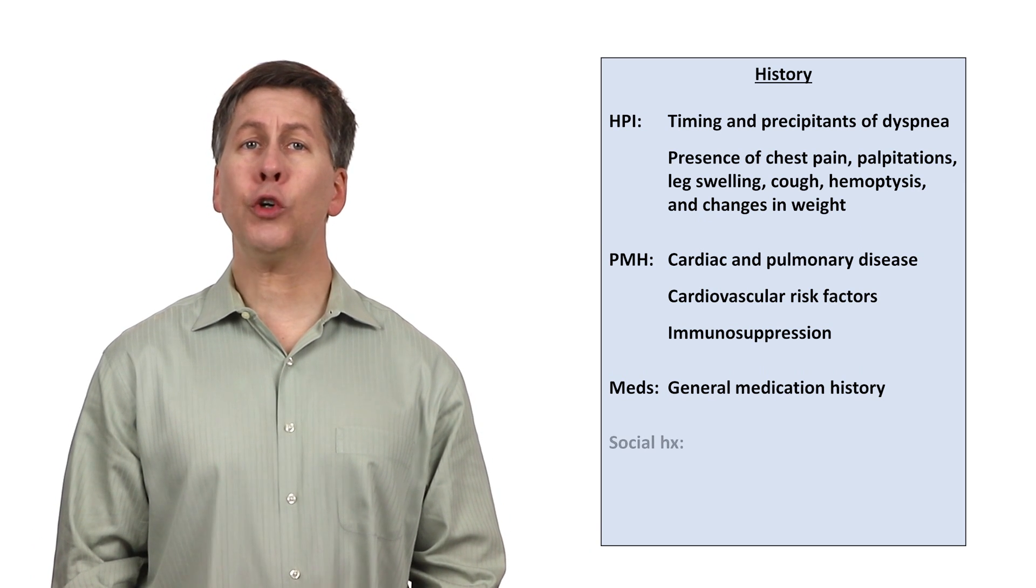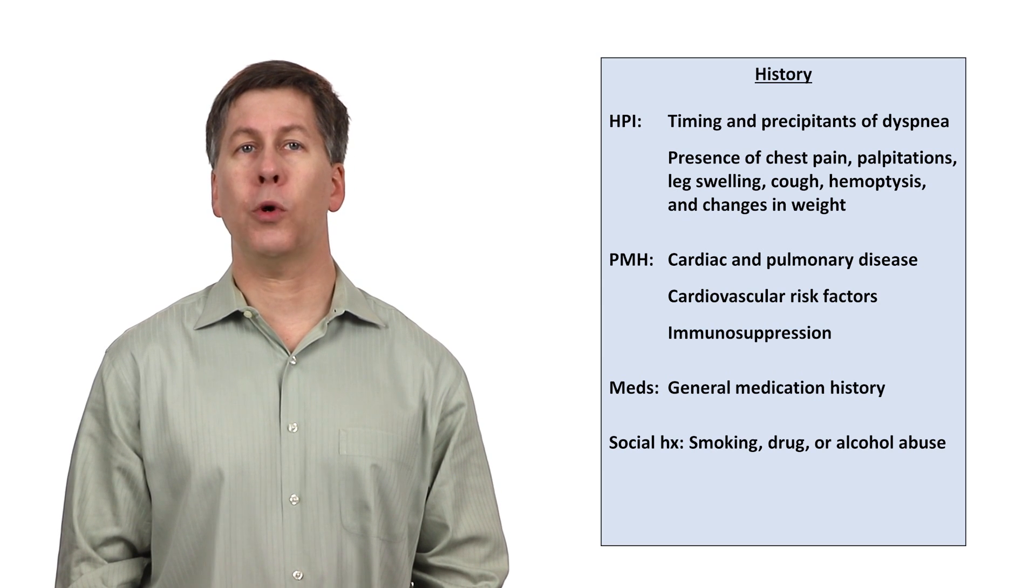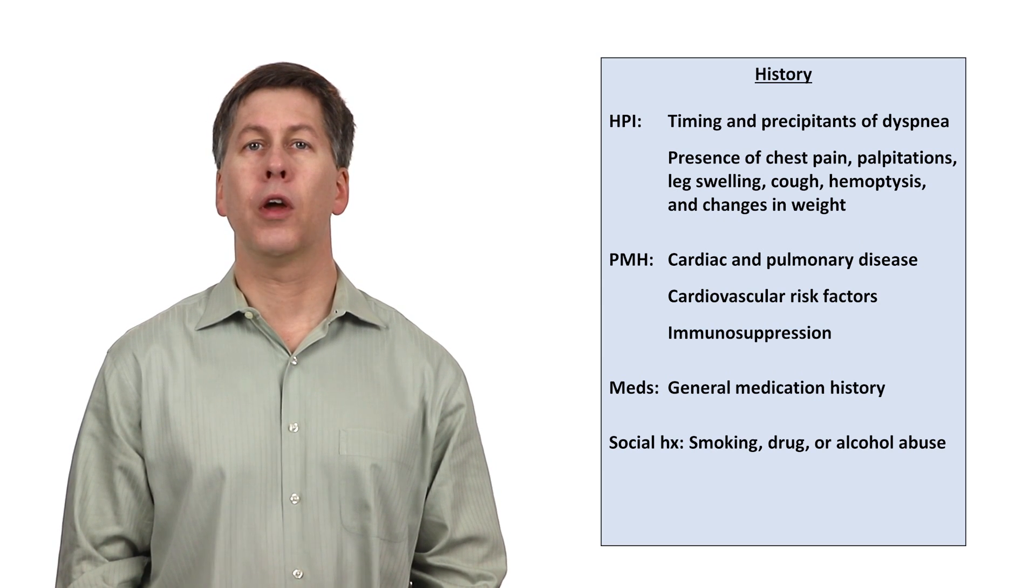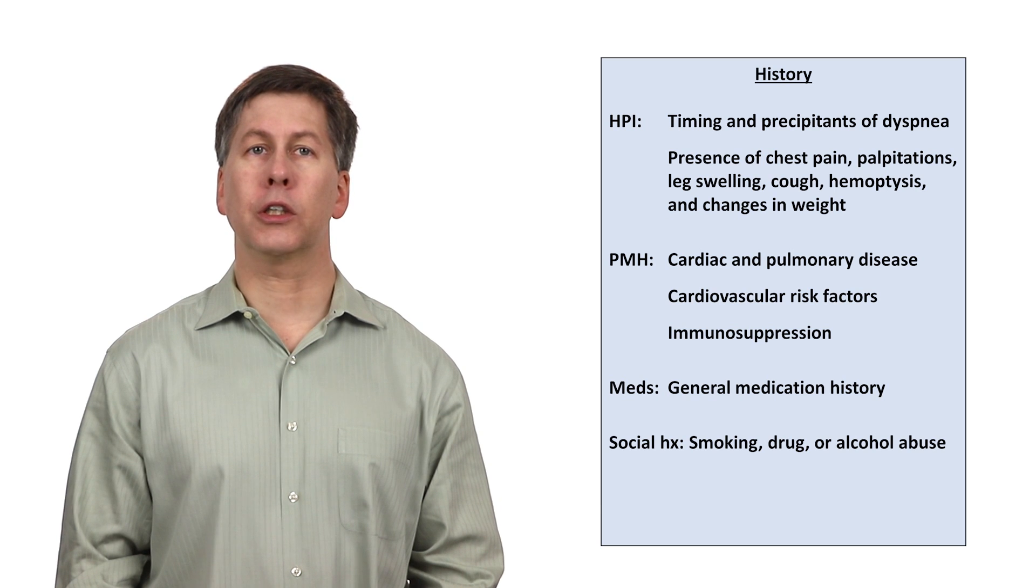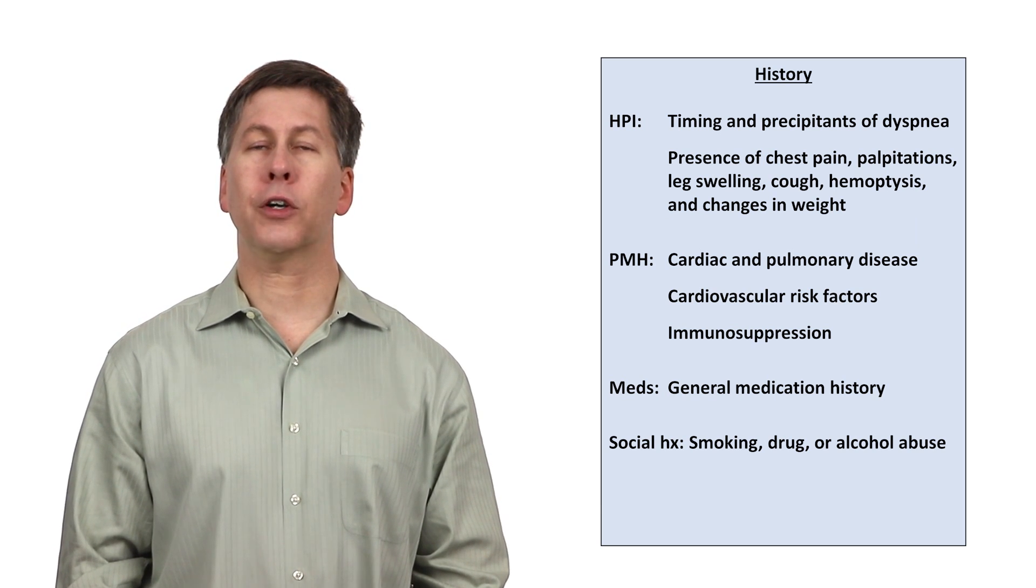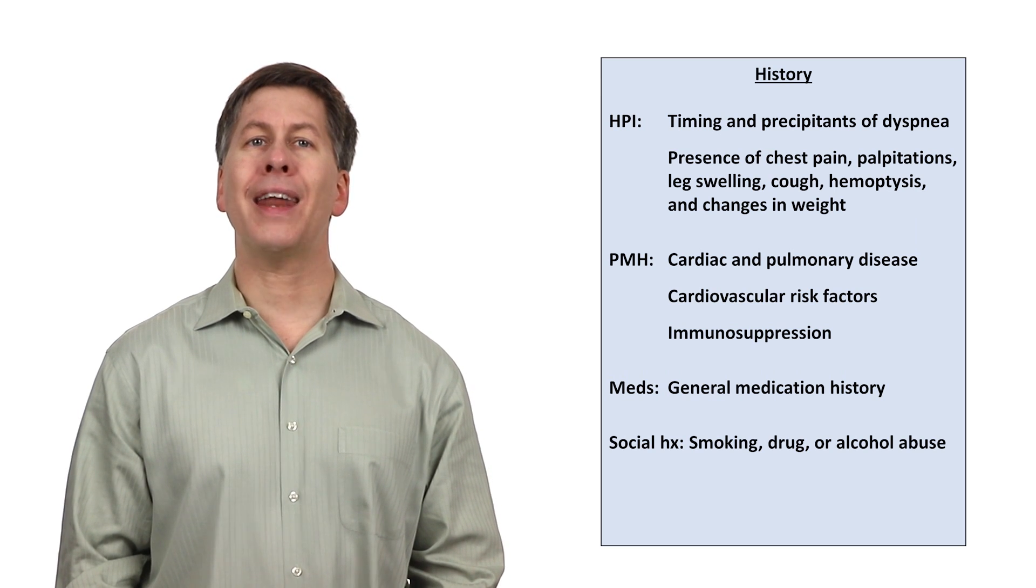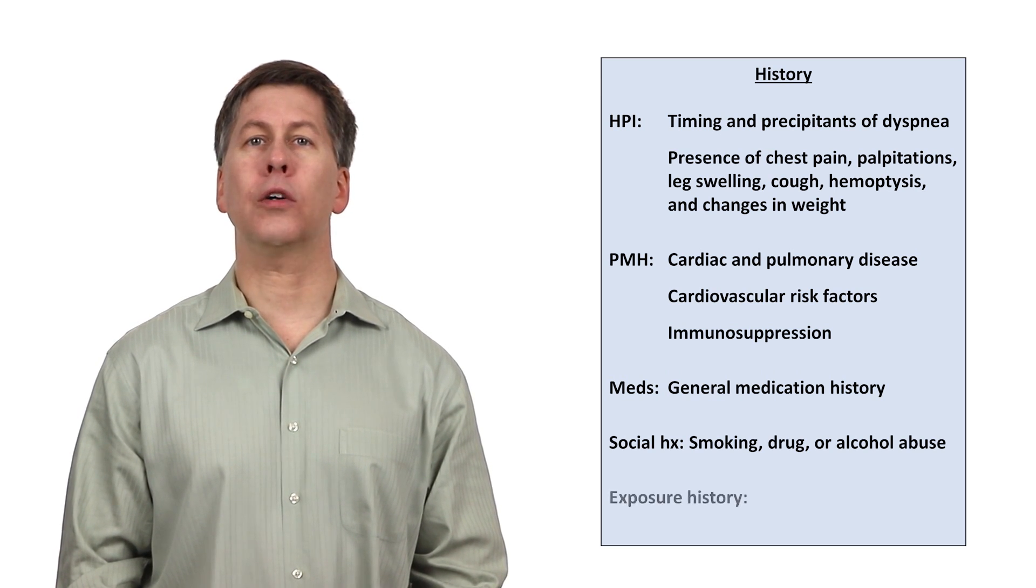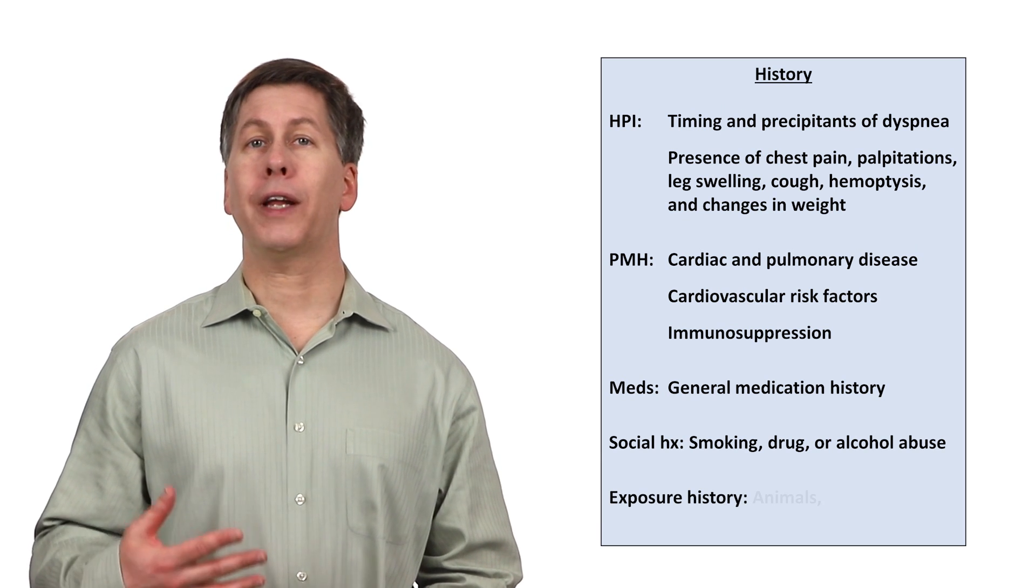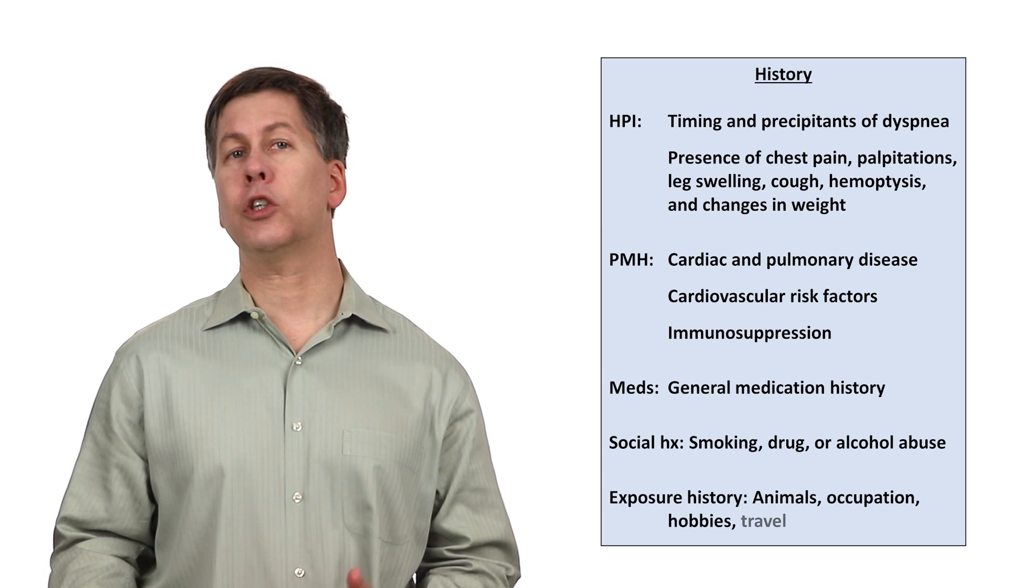In the social history, ask about smoking which is a cardiovascular risk factor and obviously predisposes the patient to COPD. Also ask about alcohol and drugs, particularly stimulants which will predispose the patient to heart failure, arrhythmias, and pulmonary hypertension. And ask whether the patient has had any other exposure history related to animals, their occupation, their hobbies, or recent travel.